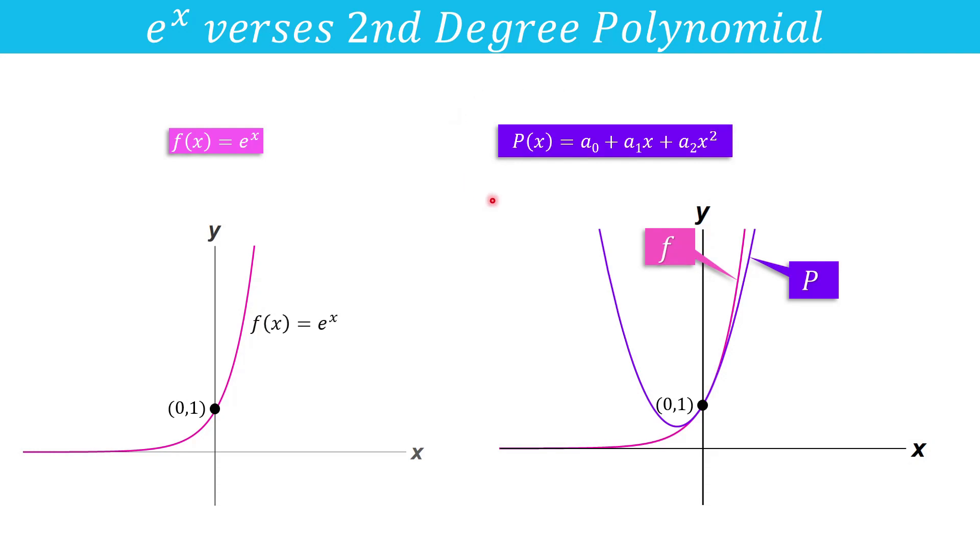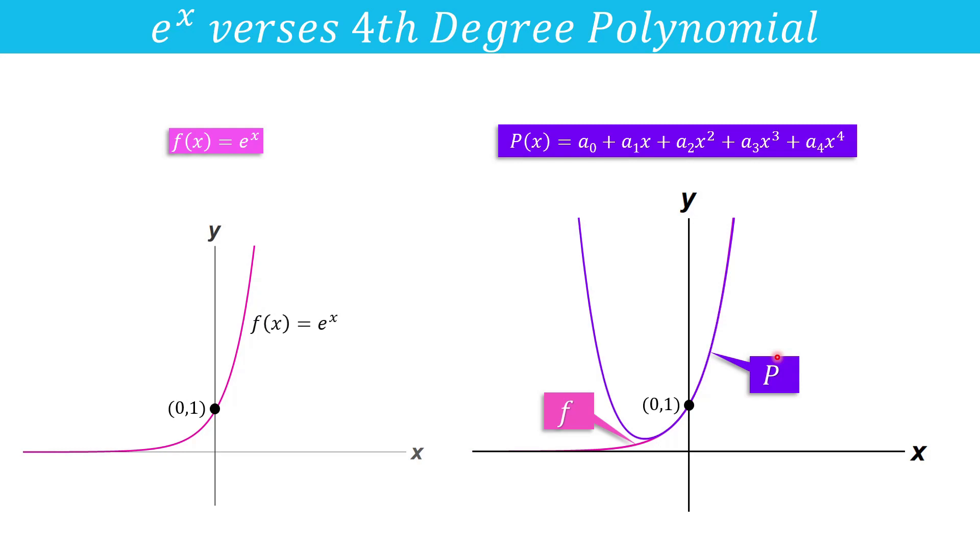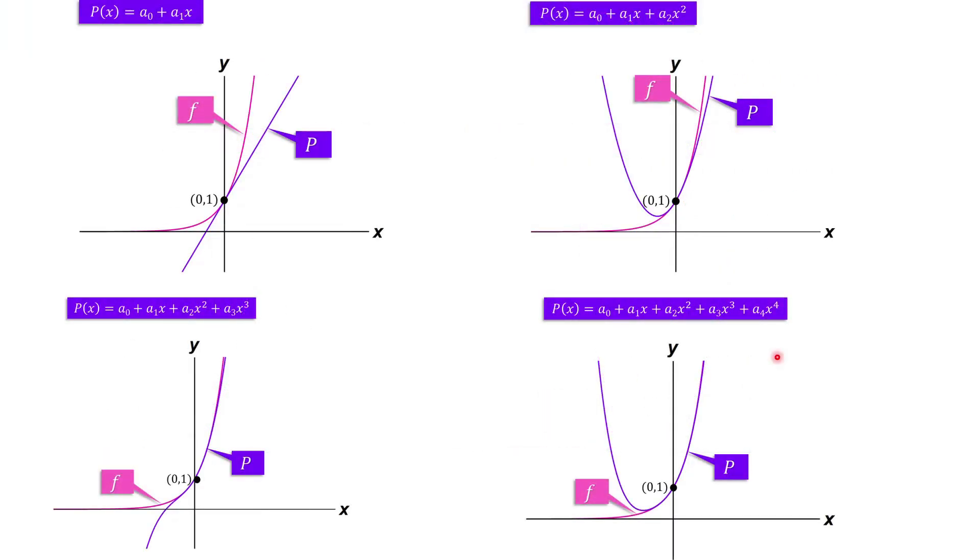Similarly, if we increase the degree of P(x), we get better and better approximation. Let us analyze what is going on here when we increase the degree of P(x). We can clearly observe in the graph that the overlapping interval of f(x) and P(x) increases with the increase of degree.